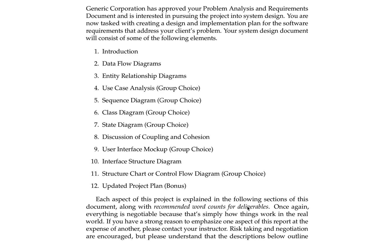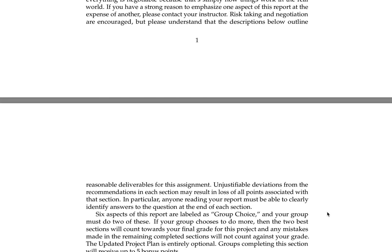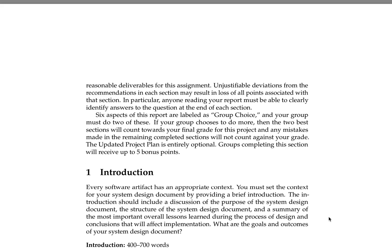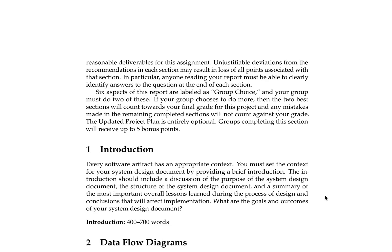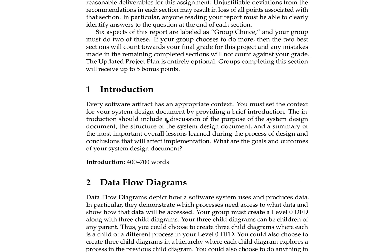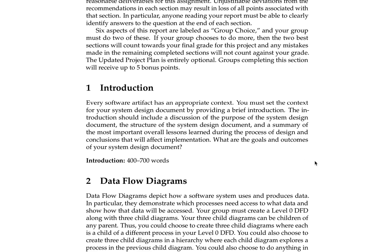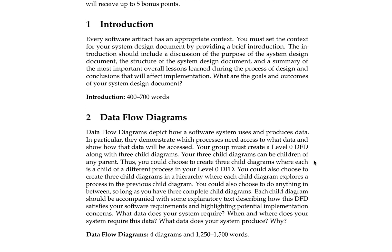These are all presented in a similar format as in the first deliverable, with recommended word counts for the actual deliverable and a question at the end of each section that should be the target you're trying to address. For the introduction, which is required, the question is: what are the goals and outcomes of this document? Give enough background so that somebody will be able to understand what you're trying to do and what you would consider a success. 400 to 700 words.